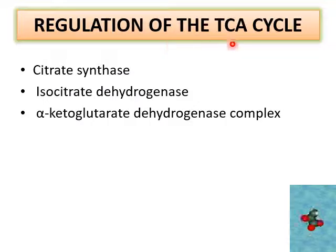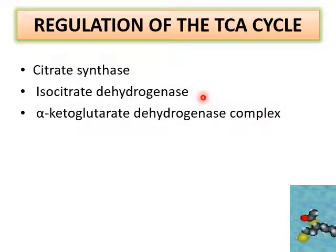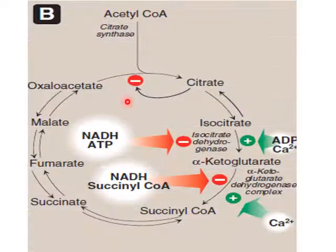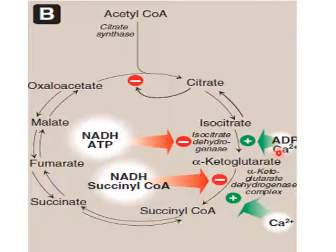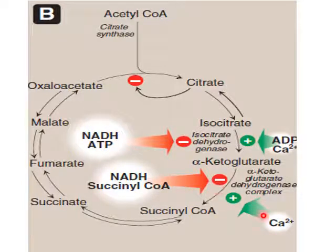Regulation of the tricarboxylic acid cycle occurs at three enzymatic steps. First, citrate synthase — high citrate concentration inhibits this enzyme. Second, isocitrate dehydrogenase — inhibited by high concentrations of NADH and ATP, stimulated by high concentrations of ADP and calcium. Third, alpha-ketoglutarate dehydrogenase complex — inhibited by high concentrations of NADH and succinyl-CoA, stimulated by high concentration of calcium.